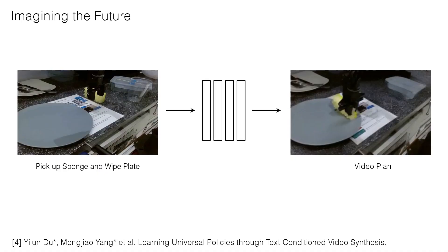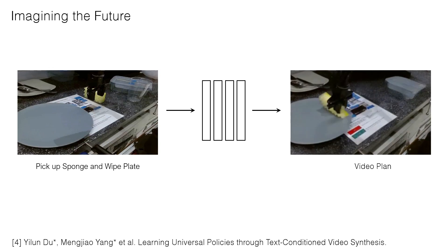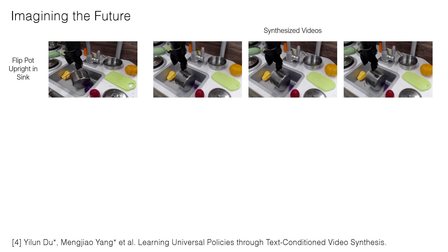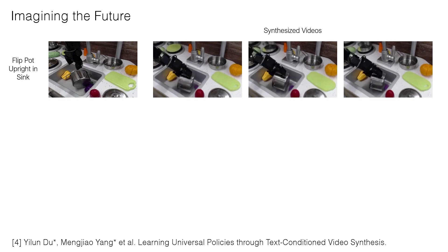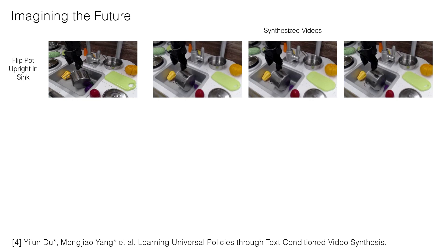You can imagine using generative models not only to generate the actions you want to do, but also to imagine the future you would like. If I ask my generative model to 'pick up a sponge and wipe the plate,' it can synthesize a video plan of the action it wishes to do in the future and use this to act. Similarly, given an image where I want to flip the pot upright in the sink, by using my generative model I can synthesize videos of the robot doing this action, and from these videos — or imagination — I can get the actions I need to flip the pot in the right way.